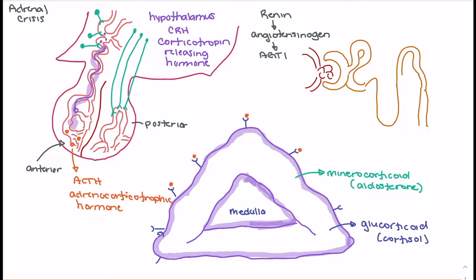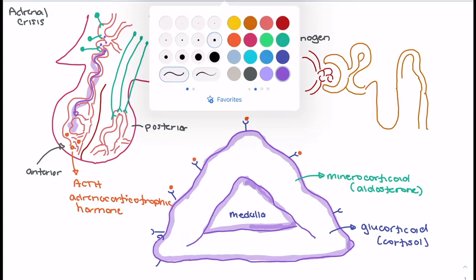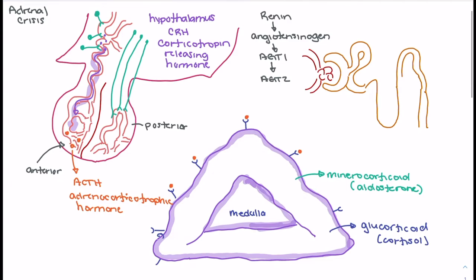Angiotensin-1 circulates to the lungs, where angiotensin-converting enzyme (ACE) converts it into angiotensin-2. That conversion occurs in the lungs by ACE. Angiotensin-2 is what triggers the release of aldosterone from the adrenal cortex, stimulating the adrenal glands to release aldosterone.